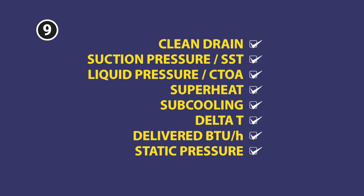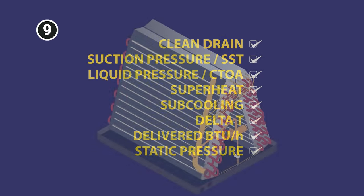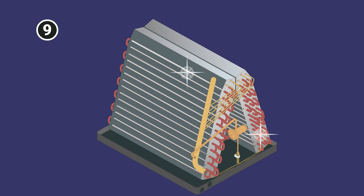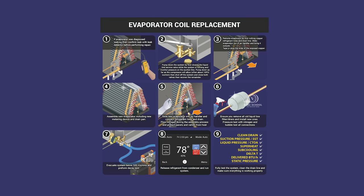Once you do all these assessments of system operation, just make sure that you button everything up and that you leave the system running and draining and fully communicate with the customer. And there you go. That's how you do a proper evaporator coil replacement. Thanks for watching. We'll catch you on the next video.